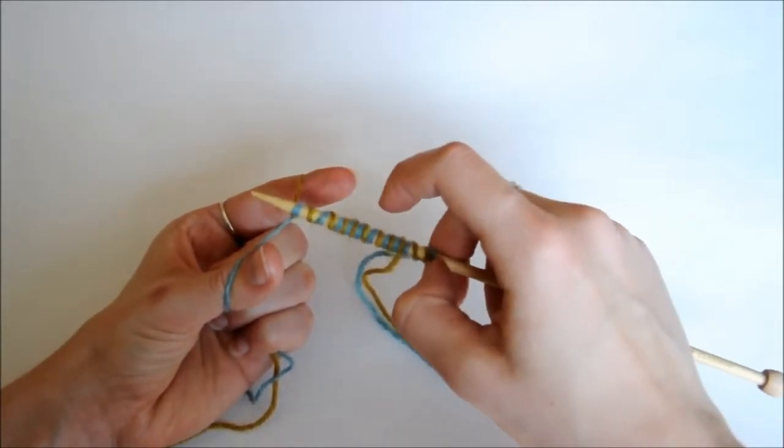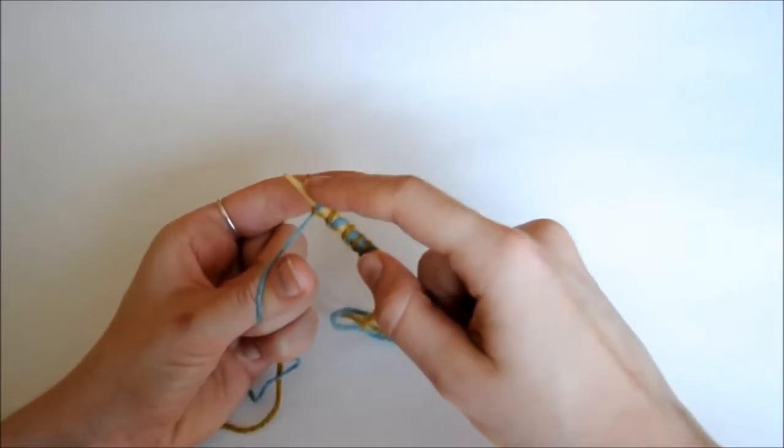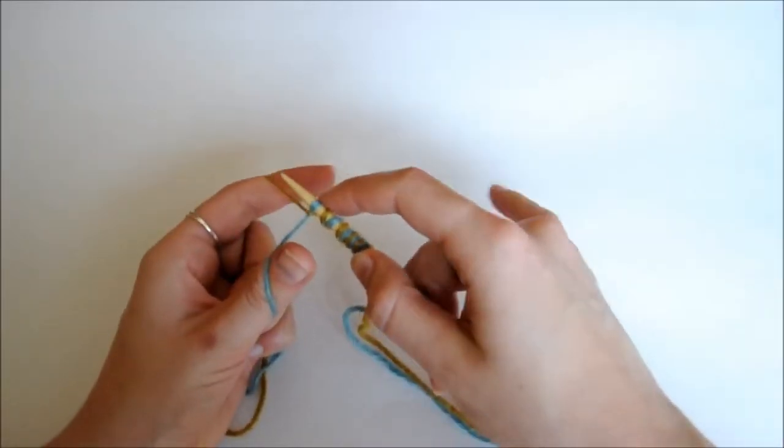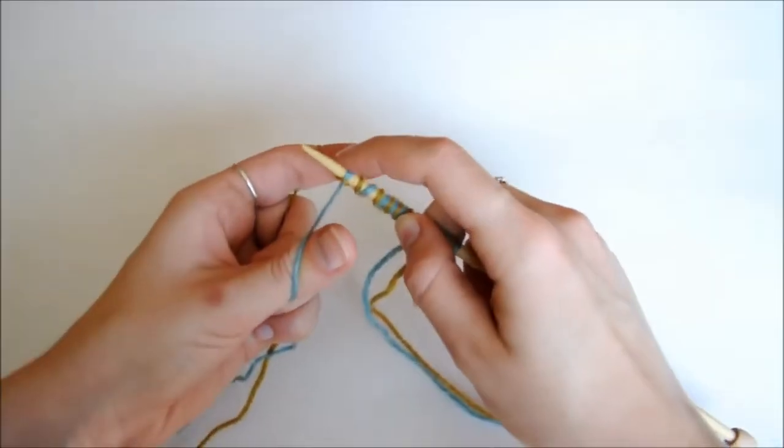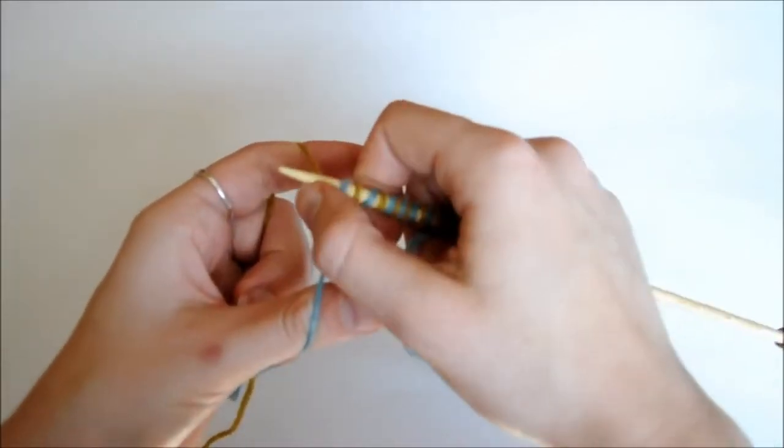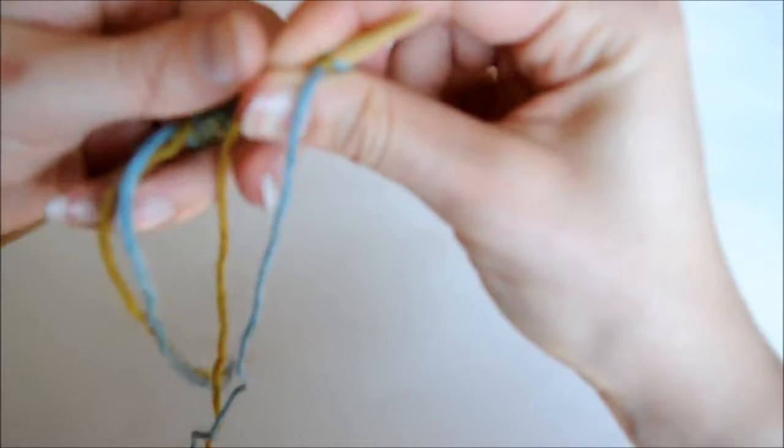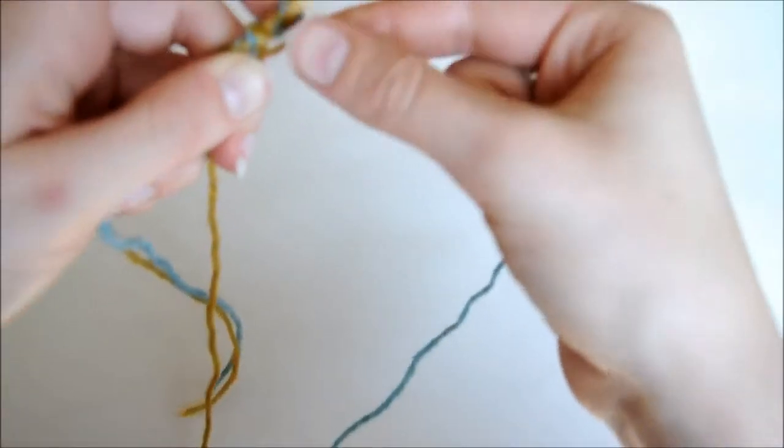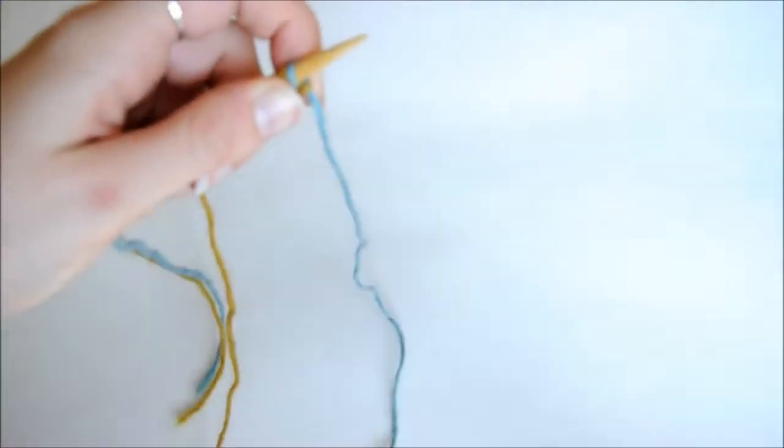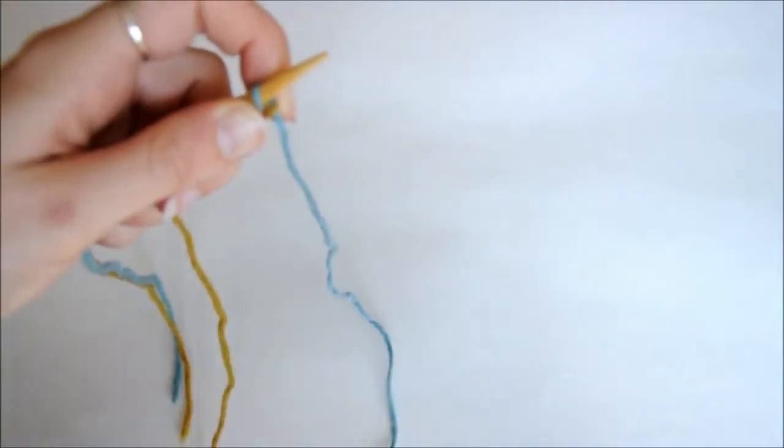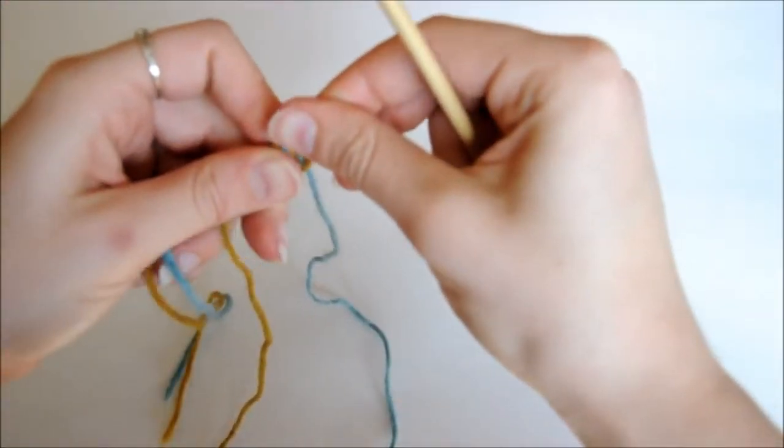And so after you've cast on that last stitch, you want to be careful that it doesn't slip off, because it's really easy to lose it. So we're going to hold the yellow carefully as we turn our work. And we're just going to hold it with our thumb for a minute. Grab our second needle, and we're going to start our first row.